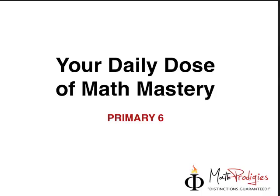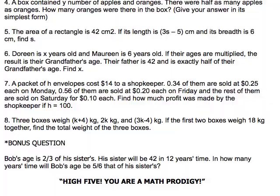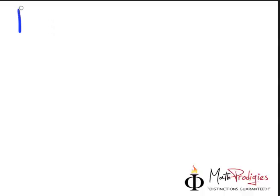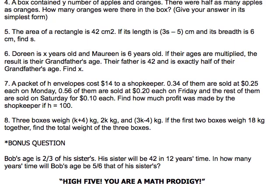For this kind of question I would definitely love to write it down. So Doreen is X, let's put it Doreen is X. Maureen is 6. Now what else? We also know that if their ages are multiplied, the result is their grandfather's age.